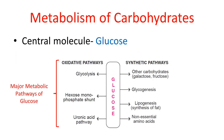First, let us talk about carbohydrate metabolism. Glucose is always considered the central molecule, because whichever higher carbohydrates — such as polysaccharides — are present, during their metabolism they are first converted into glucose, and then glucose further undergoes various oxidative or synthetic pathways. The major metabolic pathways of glucose are shown here.